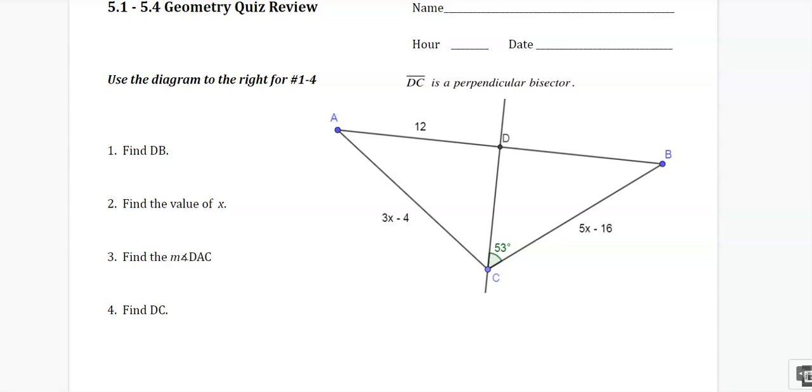Number one says DC is a perpendicular bisector. So that means it bisected the side and it's perpendicular at 90 degrees, which should give me some information. Let me write what I know. So 12 and 12. If this is 90 and this is 53, this is going to be 37. And then these two triangles should be congruent.